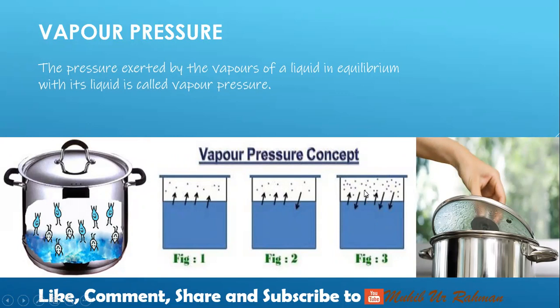At the equilibrium stage, the pressure exerted by vapors of a liquid in equilibrium with its liquid is called vapor pressure. When evaporation and condensation rates are equal, we call this stage vapor pressure. The proper definition and diagram should be written in your book — that is your home task.